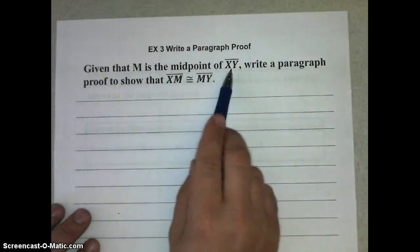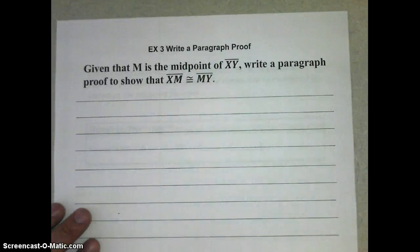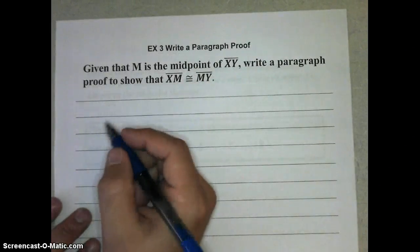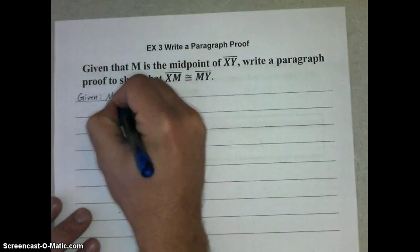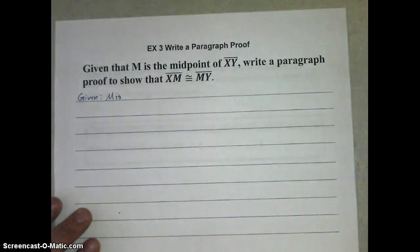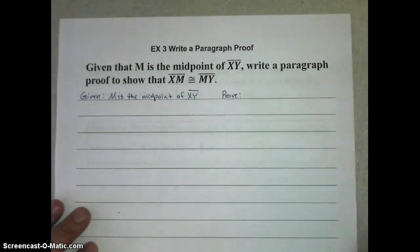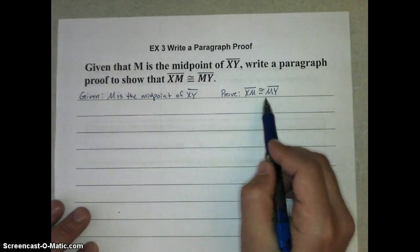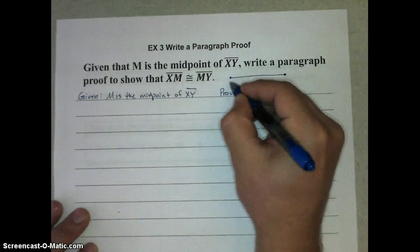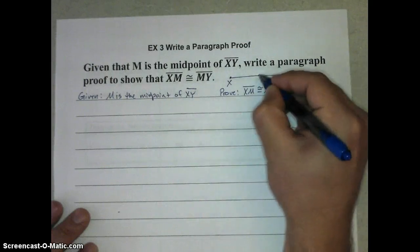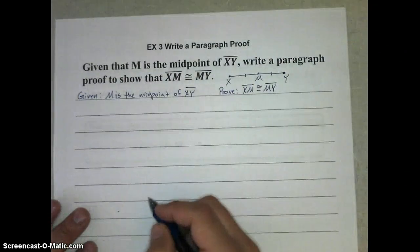We're given that M is the midpoint of XY. We need to write a paragraph proof to show that XM is congruent to MY. So the first thing we need to do in our proof process is state the given: M is the midpoint of XY. And state what it is that we're trying to prove: XM is congruent to MY. Now, a lot of times it's good to put a diagram with that. So we know from our diagram these have to be congruent. We just have to be able to explain that.